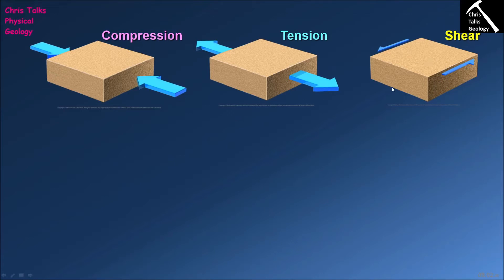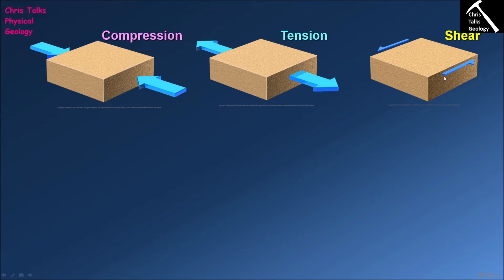As the plates move away from each other, the rock in the middle is being stretched out by these two huge pieces of crust wanting to separate. The final type of stress is shear stress, which occurs when different sides of our block of rock are being pushed in different directions. One side wants to move to the left while the other wants to move to the right, exposing the rock in the center to a shear stress — stretching and warping it.